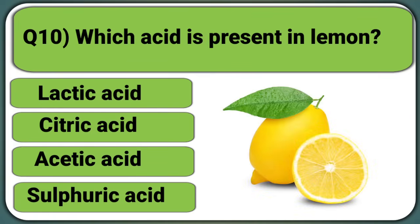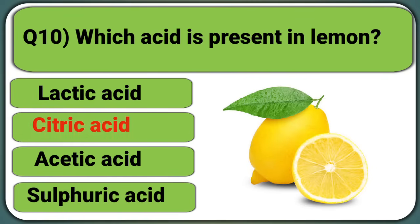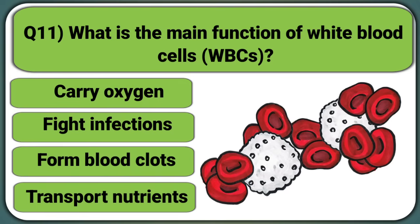Which acid is present in lemon? Lactic acid, Citric acid, Acetic acid, or Sulfuric acid. Answer: Citric acid.